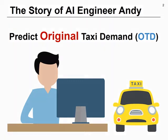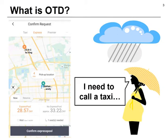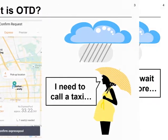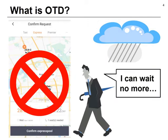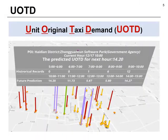Original taxi demand, or OTD, is an attempt to call a taxi via the taxi calling app. This is a screenshot of a taxi calling app to generate a new taxi call. But the attempt to call a taxi can be cancelled. Therefore OTD represents all potential taxi calling demands. My job is to predict these original taxi demands for each point of interest and for each unit time slot, also known as UOTD.